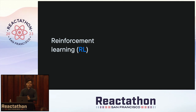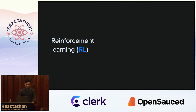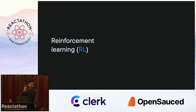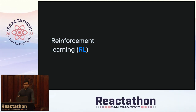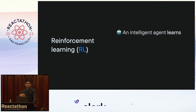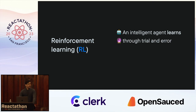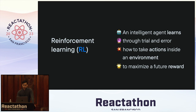I actually want to take a step back — way back to the 1980s, when the idea of what's known as reinforcement learning was first introduced. If you take anything from this talk, I really want you to take this: reinforcement learning is an intelligent agent learning through trial and error how to take actions inside of some environment — whether it's known or unknown — in order to maximize the future reward.